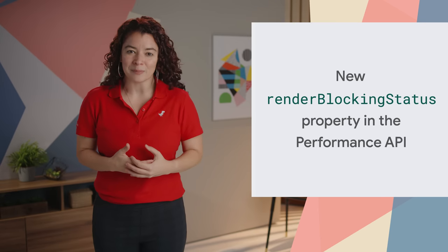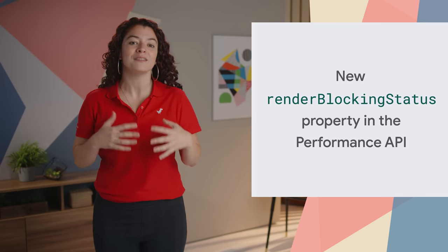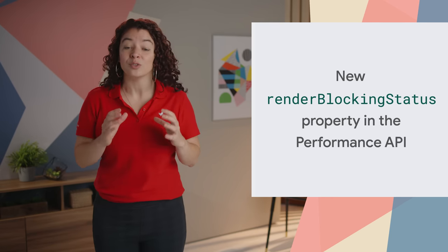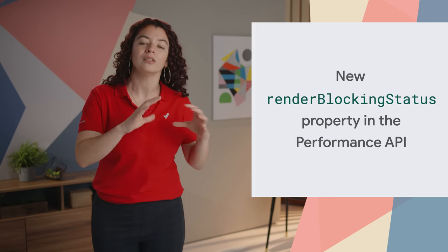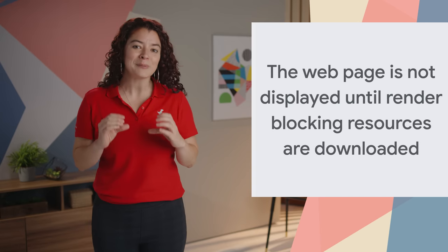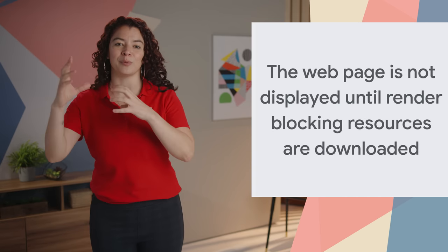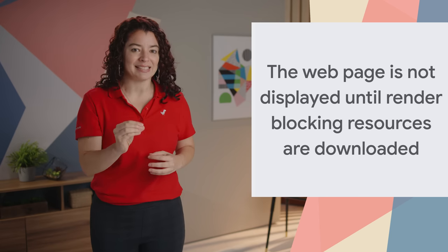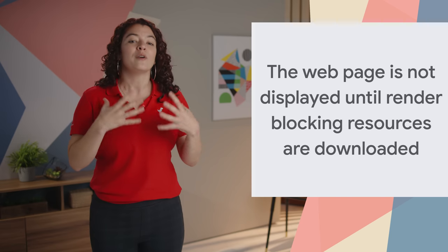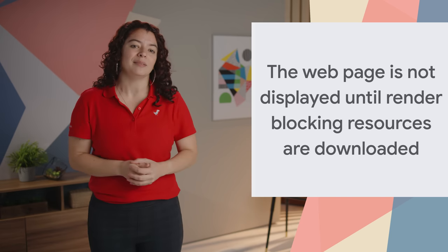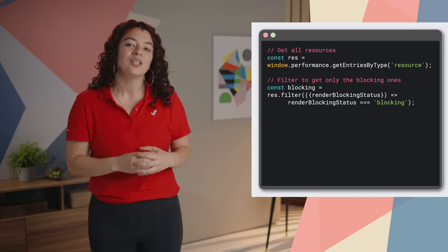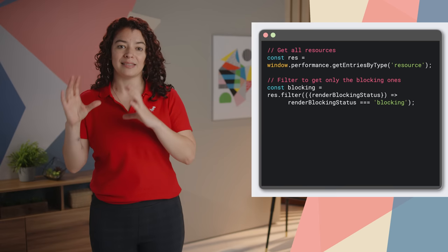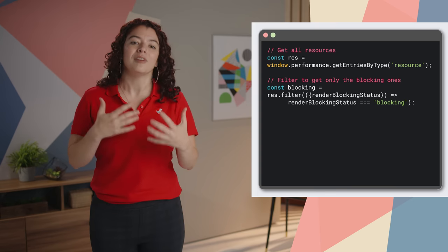Reliable insights into a page's performance are critical for developers to build faster user experiences. So far, developers have relied on complex heuristics to determine whether a resource is render-blocking or not. Now, the Performance API includes the renderBlockingStatus property, which provides a direct signal from the browser that identifies the resources that prevent your page from displaying until they are downloaded. The code snippet here shows how to get a list of all your resources and use the new renderBlockingStatus property to list all of those that are render-blocking.